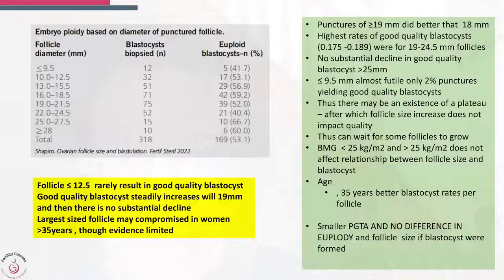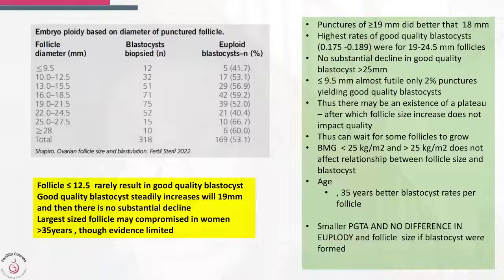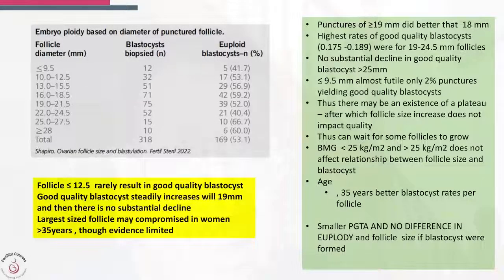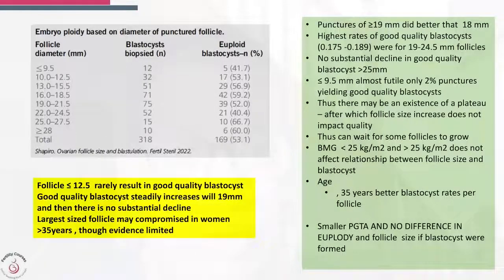Even as follicles grow larger, especially in older women — as women cross 35 — larger follicles may start collapsing or becoming compromised in quality. That may be one reason to collect oocytes when follicles are between 18 and 20 mm. The study tells us that follicles of 19 mm or more did better than 18 mm, with the highest rates of good blastocysts for follicles between 19 and 24.5 mm, and no substantial decrease in quality after 25 mm.